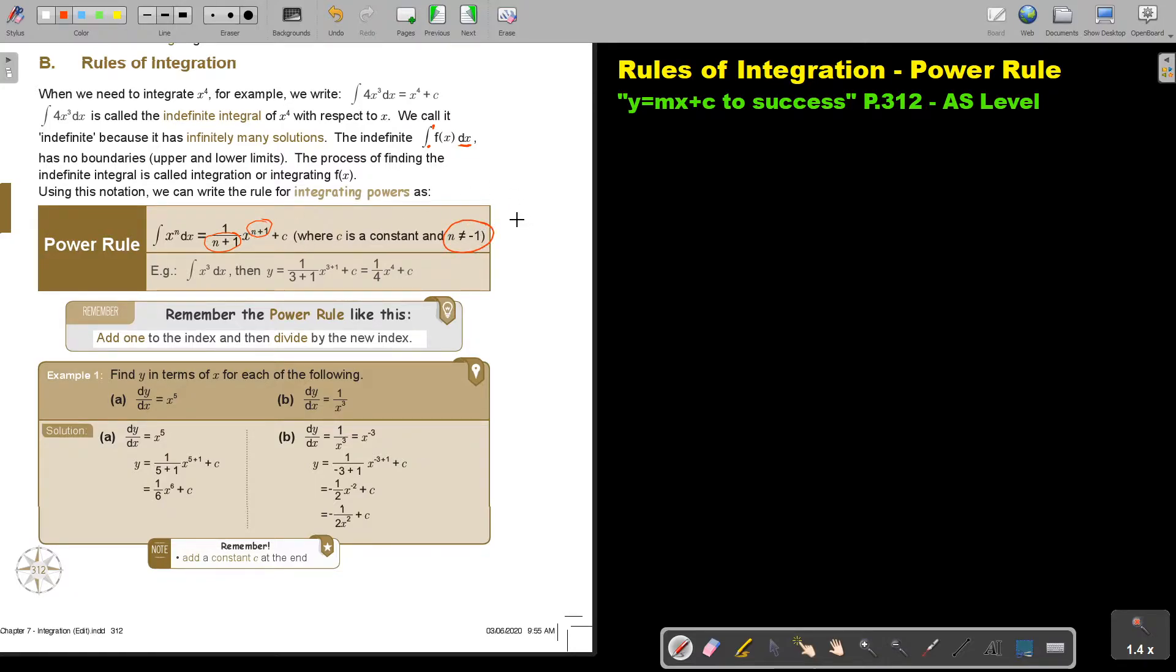So n cannot be negative 1. At this stage, we cannot integrate this in this chapter. In another chapter, we will go into those rules. So in this example, I will just add 1 to the 3 and then divide by that plus c. Remember the power rule like this: add 1 to the index and then divide by the new index.